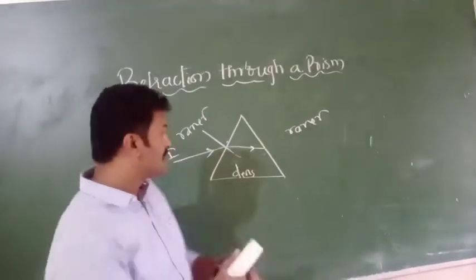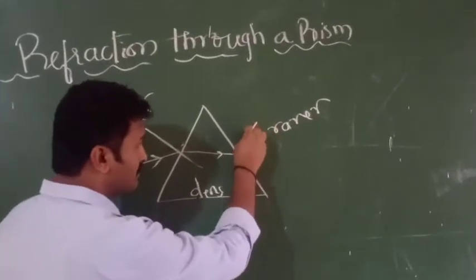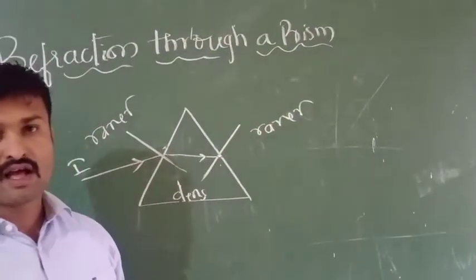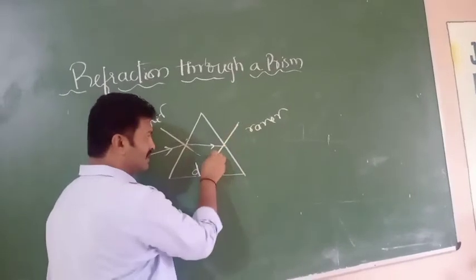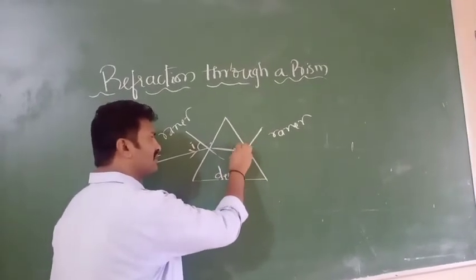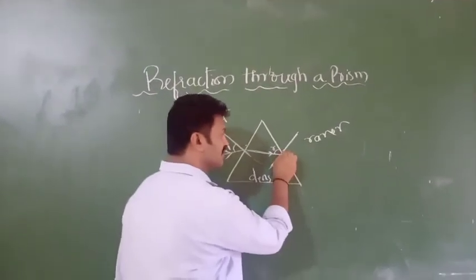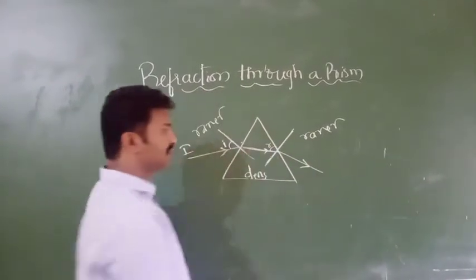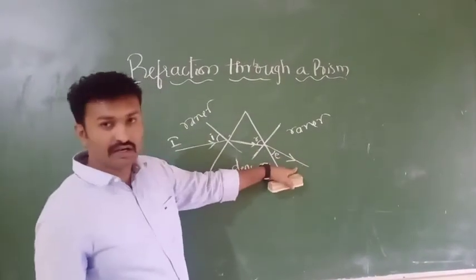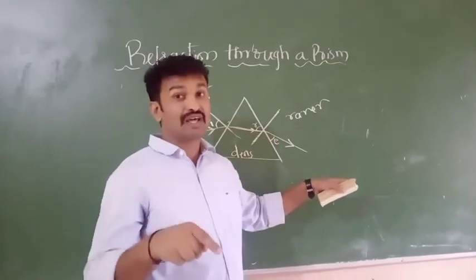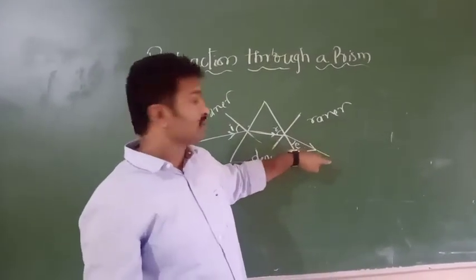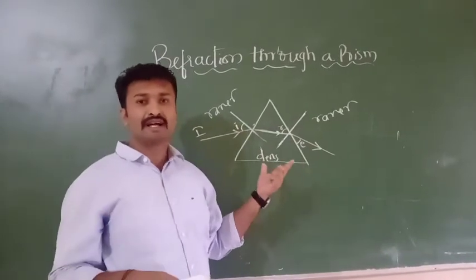And from denser to rarer, I will draw one more normal here. The refracted ray moves away from the normal. This is the angle of incidence and this is the angle of refraction. So when going denser to rarer, the ray moves away from the normal. This is what happens when a ray of light enters and exits a prism.